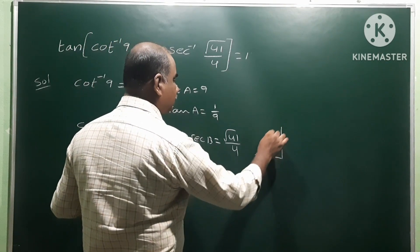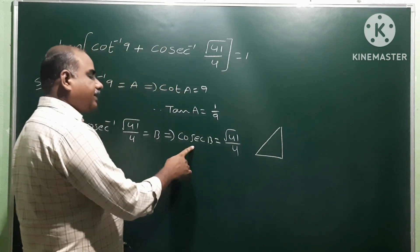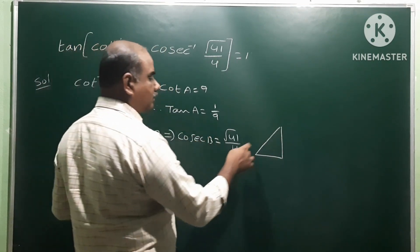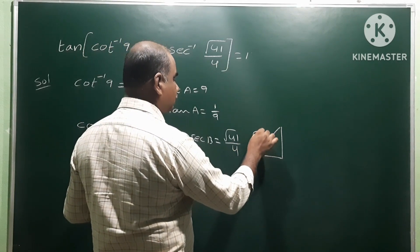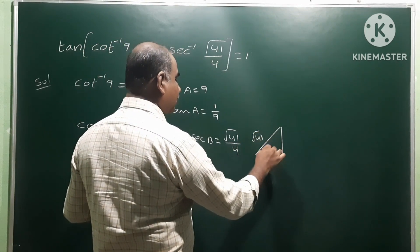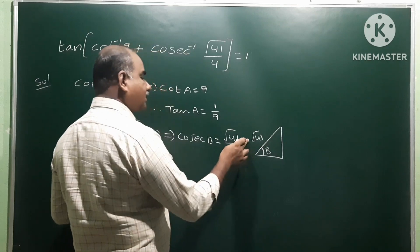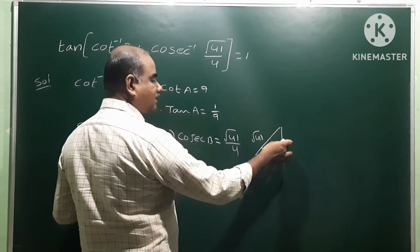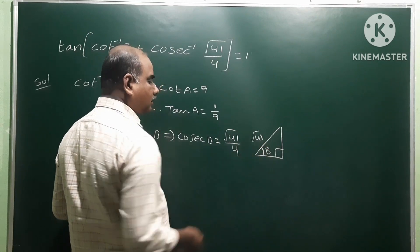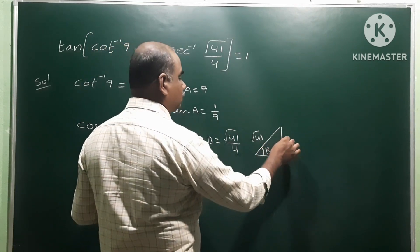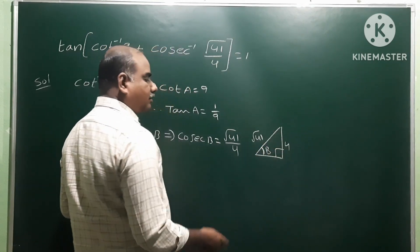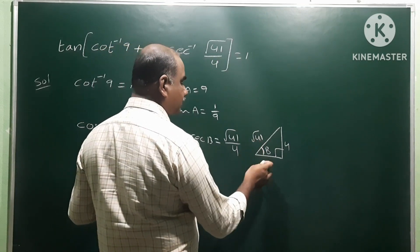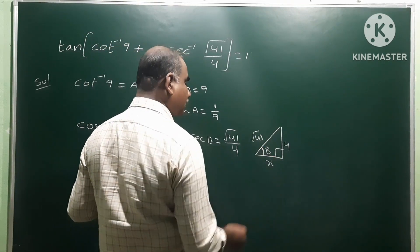Using the Pythagorean theorem: cosec(b) means hypotenuse divided by opposite side. So the hypotenuse is √41, the angle is b, this is the right angle, and the opposite side — which is opposite to angle b — is 4.